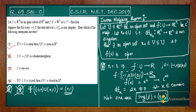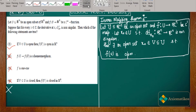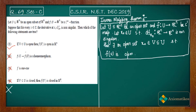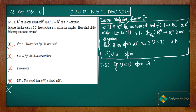Let me erase this and now prove the first option for knowledge purposes — otherwise we are finished with the problem. Option A says: if V ⊂ U is open, then f(V) is open in ℝⁿ. To show this, we will use the Inverse Mapping Theorem.